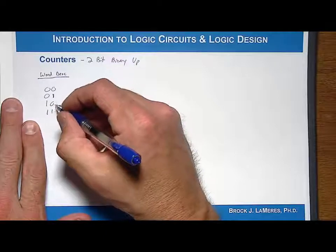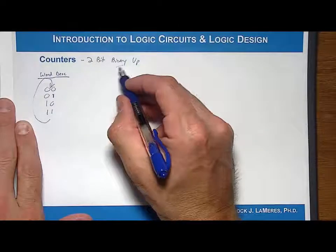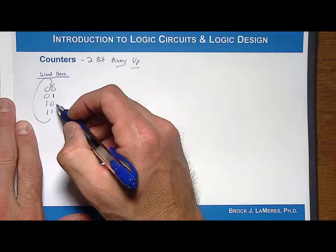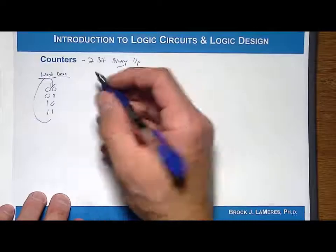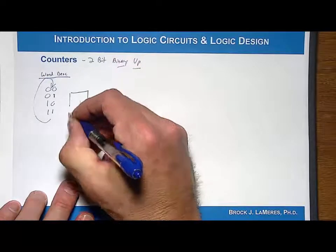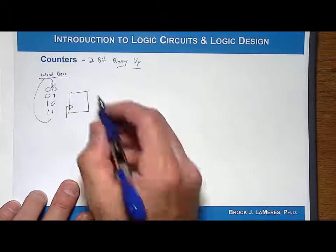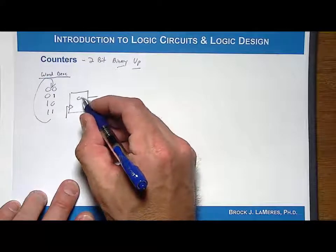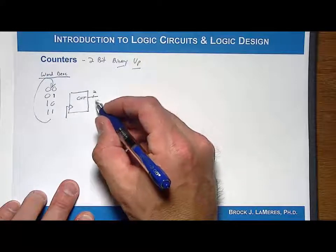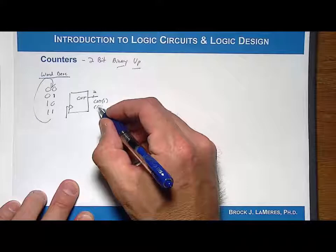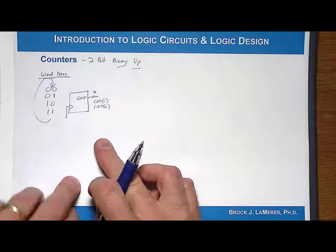It counts up: 00, 01, 10, 11, and then it rolls over and continues, counting indefinitely. This counter doesn't have any controls — you can't count up and then count down, so it doesn't have any inputs. The block diagram will have a clock, and every time you get a rising edge of the clock, you increase the count by 1. The output is called CNT, a 2-bit vector with scalars CNT1 and CNT0.